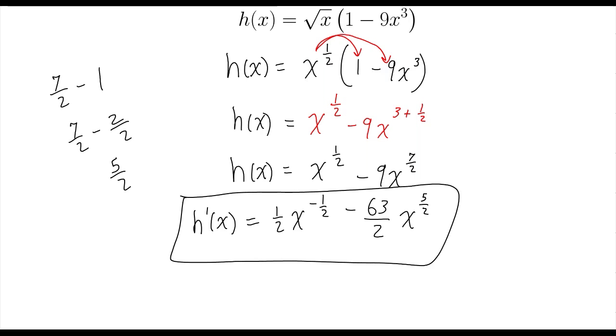So there we go. Our derivative equals 1 half x to the negative 1 half power minus 63 over 2 x to the 5 halves power.